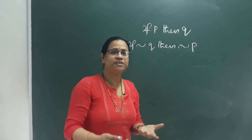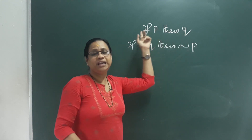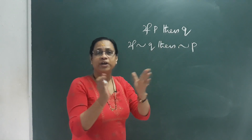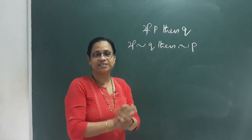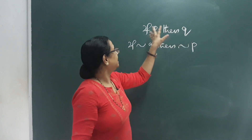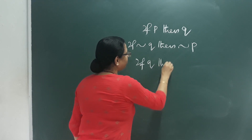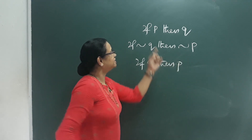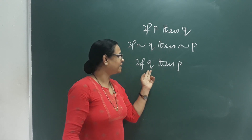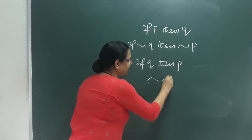Now this is Converse. For Converse, if-then is connected with two simple sentences to form a compound sentence. If P then Q — swapping the parts gives the Converse: If Q then P. This is the Converse.